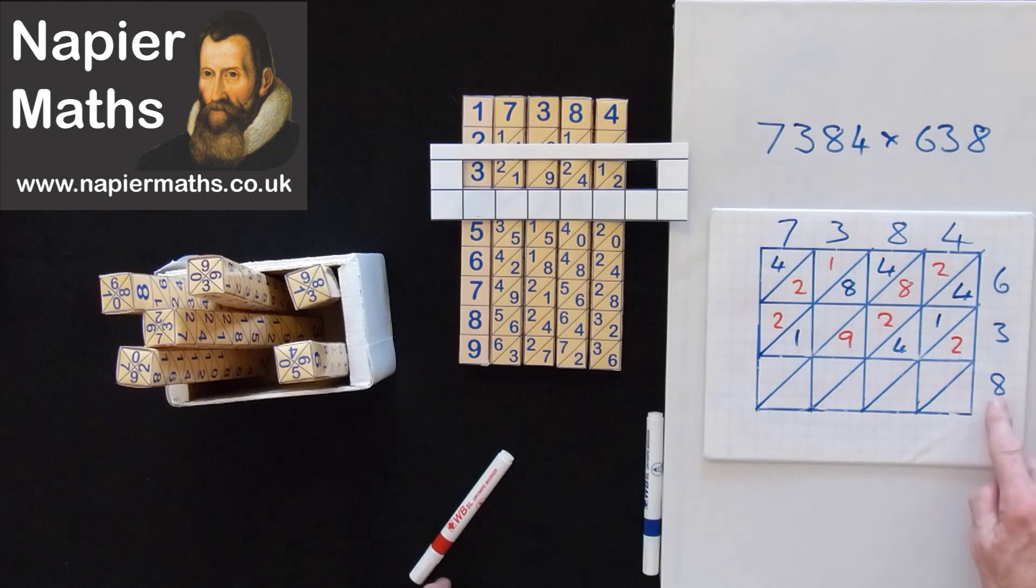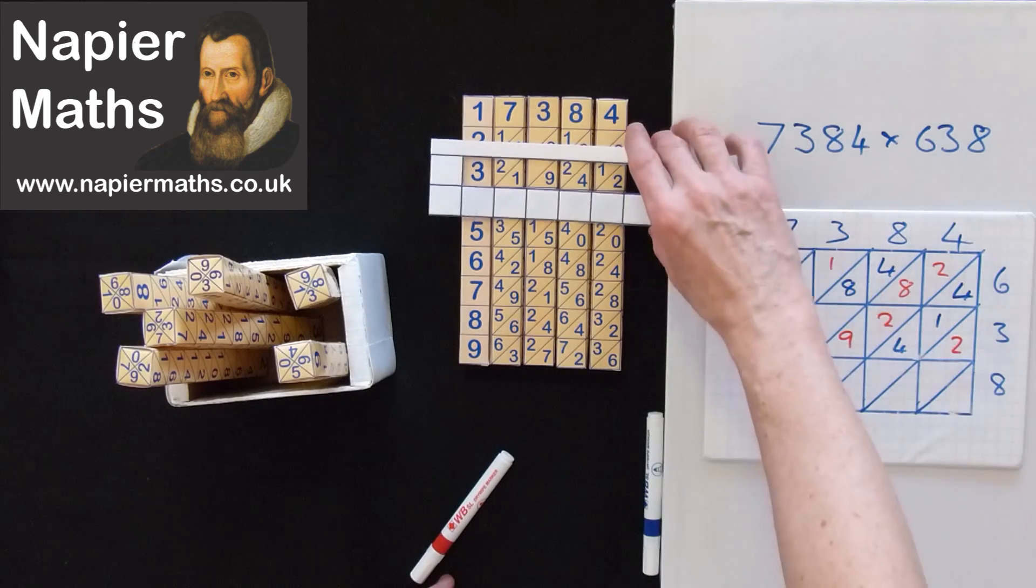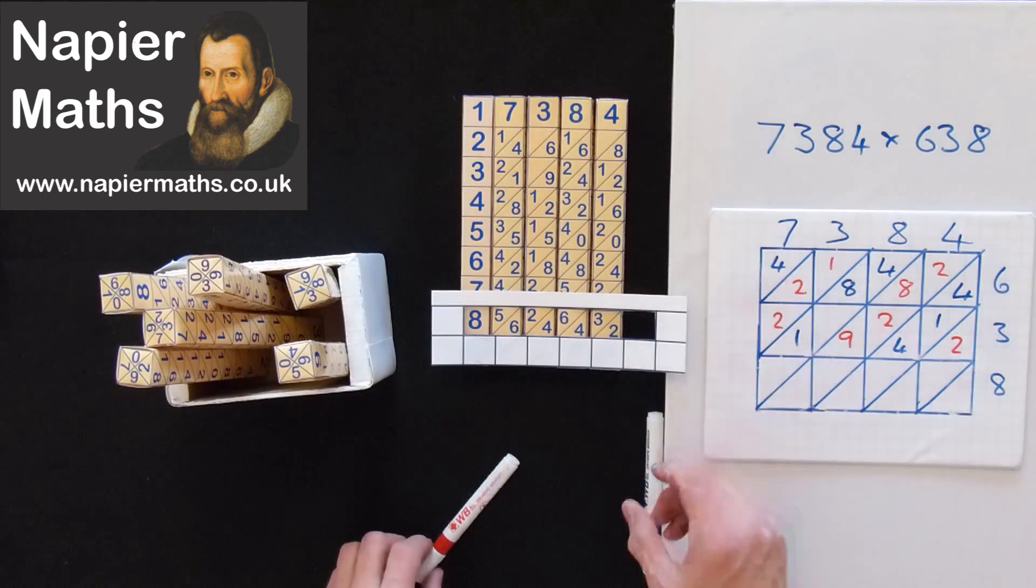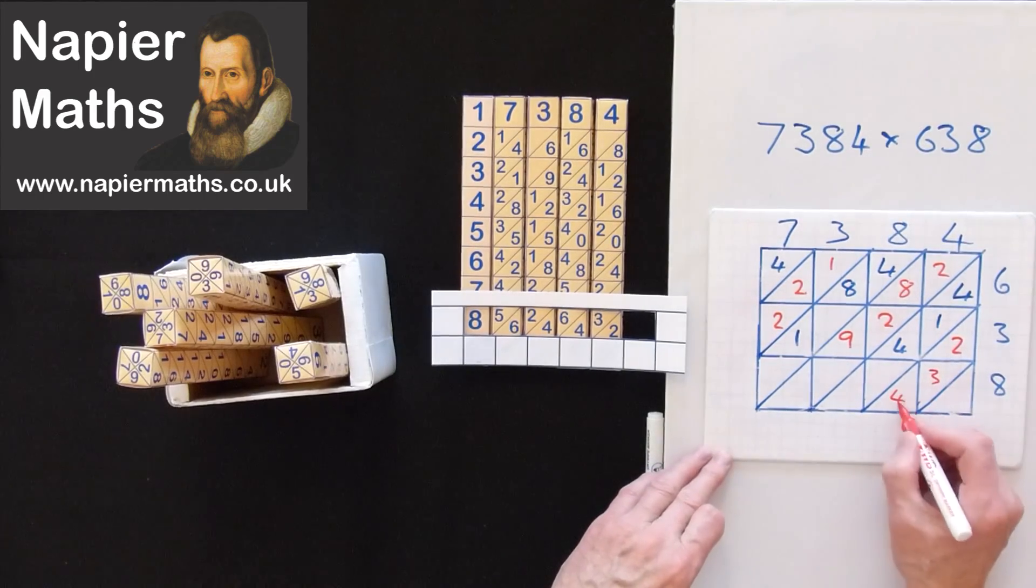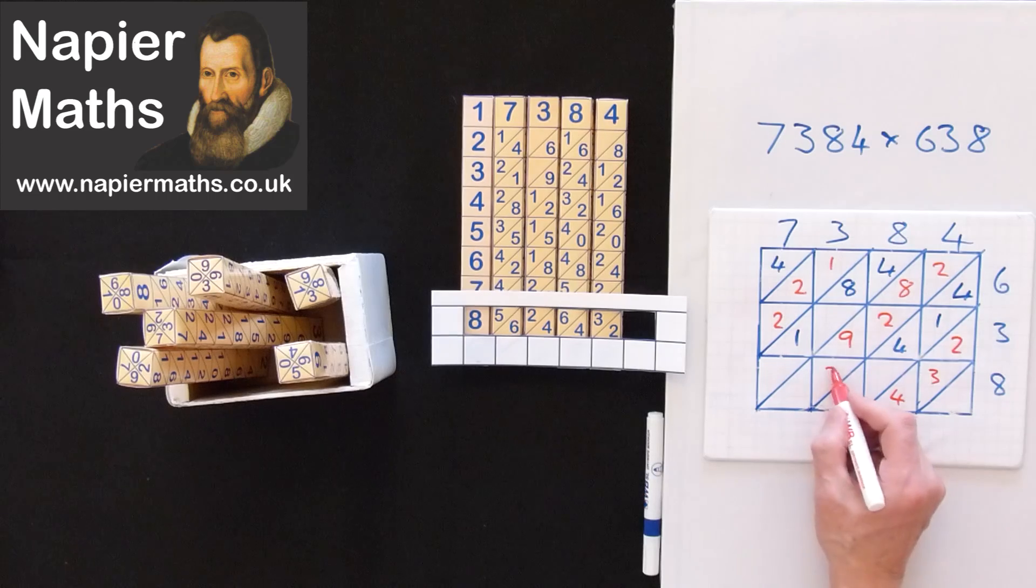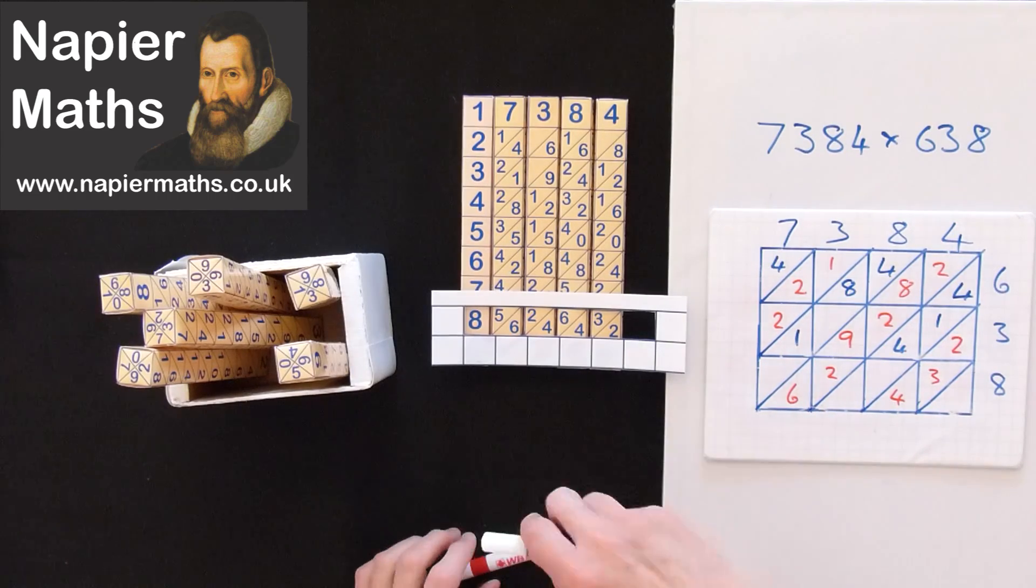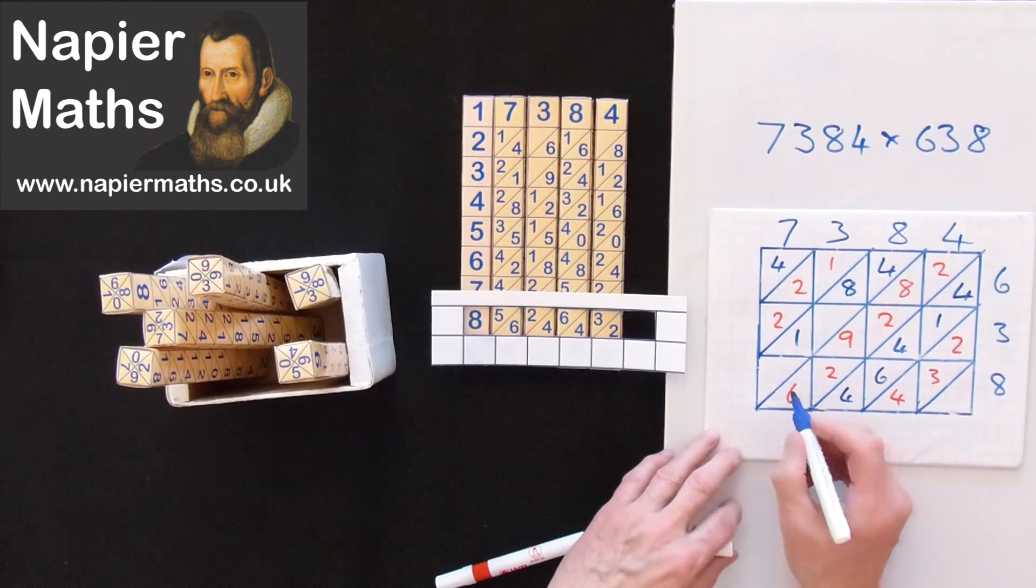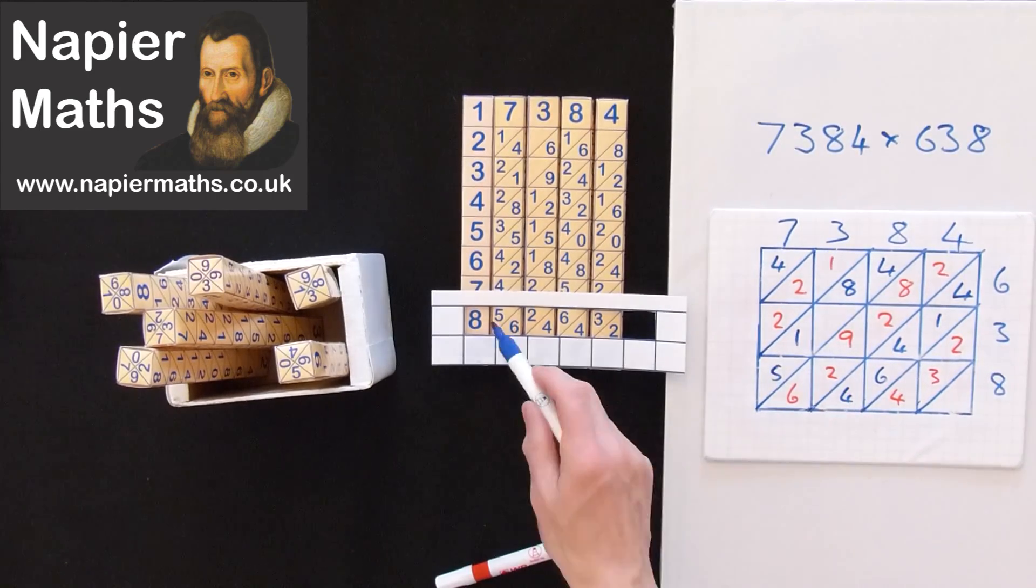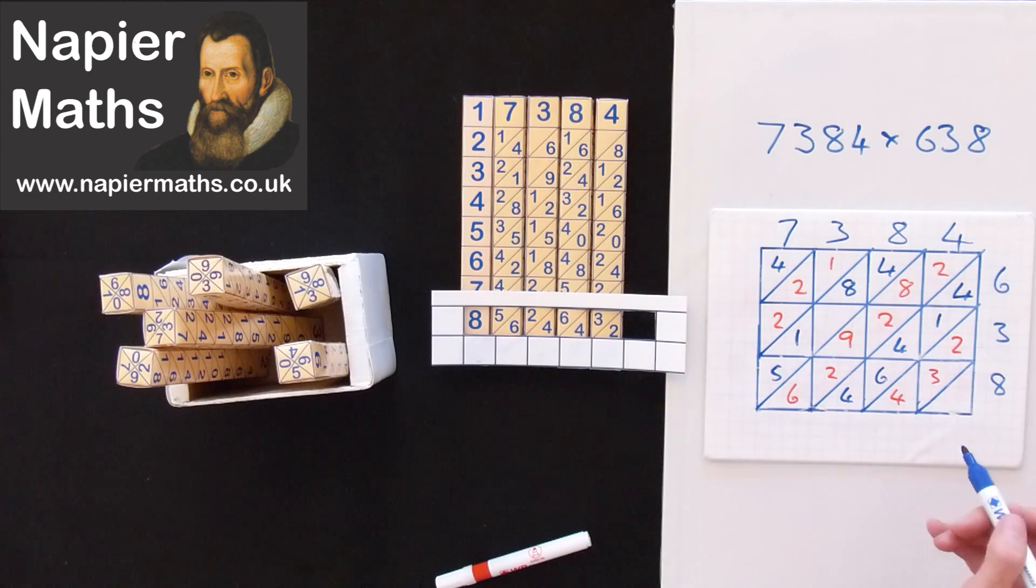And the final one is your 8, which is the units. So we go down to the 8. And again, there we've got 3, 4, 2, 6. Mark the other ones in blue. And we've got a 6, 4, and a 5. And there it is. 5, 6, 2, 4, 6, 4, 3, 2. And you can see it's the same there.